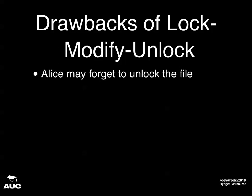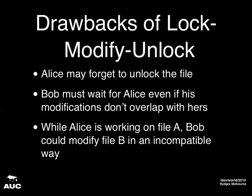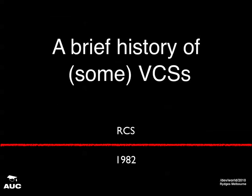Unfortunately, lock-modify-unlock has a few drawbacks. One of the most obvious is that Alice will possibly forget to unlock the file — very annoying, and you have to get an administrator in to unlock it. Bob must wait for Alice even if he wants to make a change that doesn't overlap with hers. So if they're working on two different parts of file A, there's no reason they shouldn't work at the same time, but the locking system prevents it. Another problem is that you may end up with conflicting changes even so — if Alice checks out file A while Bob grabs file B and makes changes incompatible with Alice's changes to A, and then they both check in, you've got incompatible code in the shared files. So that's RCS, which came out in 1982.